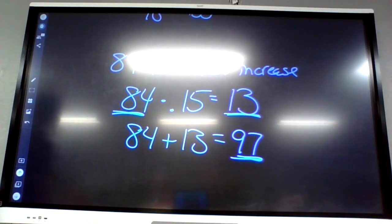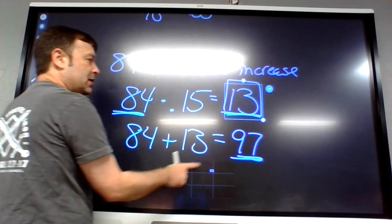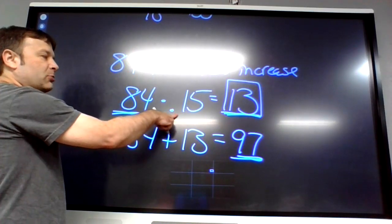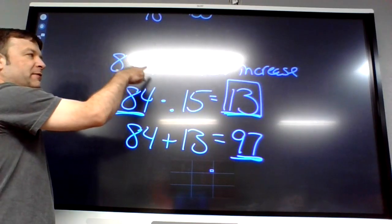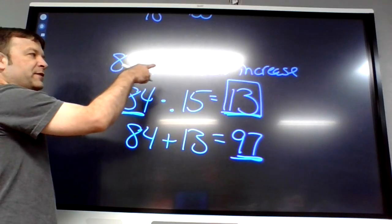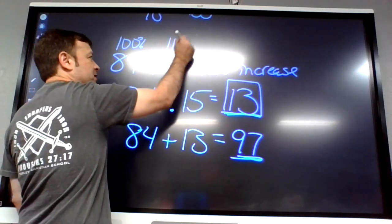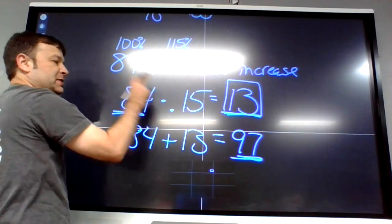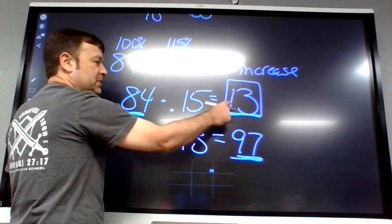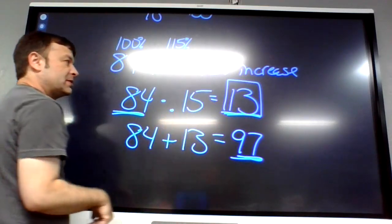You could also just multiply by 1.15. If you want to increase by 15 percent, 100 percent of 84 is 84, so increasing by 15 percent means it's 115 percent. You could do 1.15 times 84 and get the same answer. Sometimes we do need that intermediate number though — if they ask how much it's increasing or decreasing.